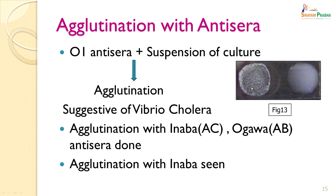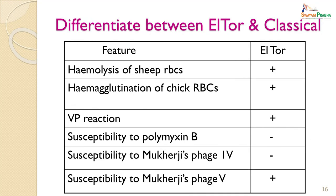The suspension with antisera added shows clumping, confirming the organism as Vibrio cholerae. After placing it in the O1 classification, you have to differentiate between the two biotypes — Vibrio cholerae El Tor and the classical biotype. Both agglutinate with O1 antisera. The organism gave haemolysis with sheep RBCs, agglutination of chick RBCs, a VP reaction positive, and was susceptible to Mukherjee phage 5 — so it was placed into the El Tor biotype. The classical biotype would show susceptibility to polymyxin B and Mukherjee phage 6; since both these reactions were not observed, it was placed into El Tor.